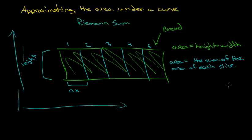We could also say that the area equals the sum of the area of each slice. So let's say the area of the whole loaf of bread was ten, and we have five slices. Therefore each slice must have an area of two: two, four, six, eight, ten. So if we knew the height times delta x — let's say the height was two and delta x equals one.